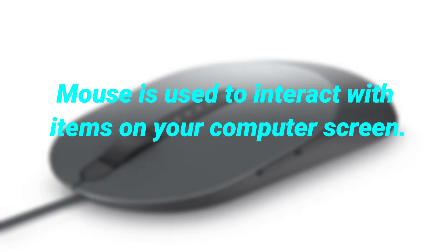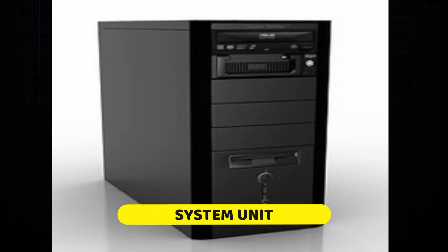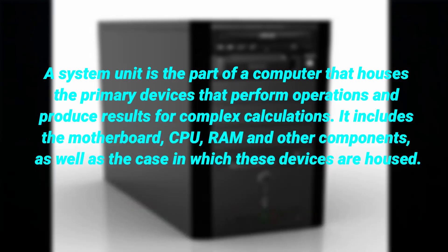What is a computer mouse? A mouse is used to interact with items on the computer screen. What is a system unit? The system unit is the part of a computer that houses the primary devices that perform operations and produce results. It includes the motherboard, CPU, RAM, and other components, as well as the case in which these devices are housed.